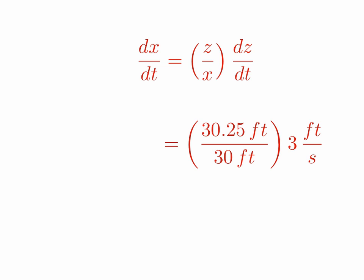We multiply, and notice the units. We have 30.25 feet for z, 30 feet for x, and 3 feet per second for dz/dt. The feet will cancel in the z divided by x terms, and then our product will be feet per second, which is good in terms of the unit, because we would expect that dx/dt would be in terms of feet per second. When we solve, we get that dx/dt is approximately equal to 3.03 feet per second.